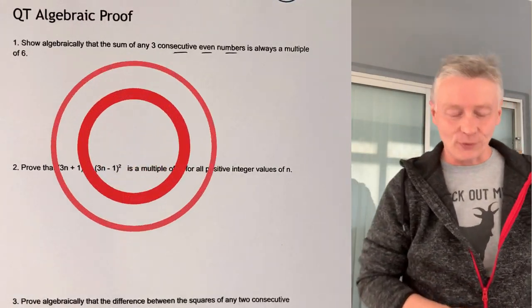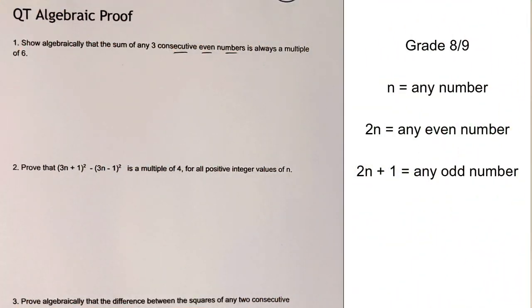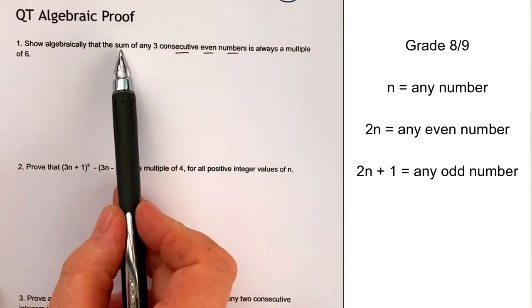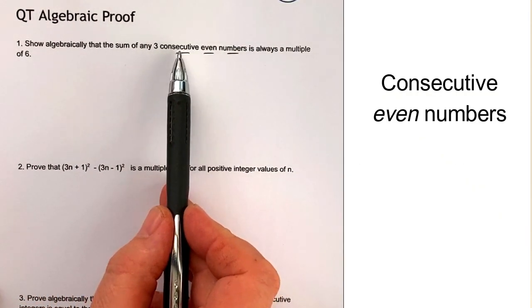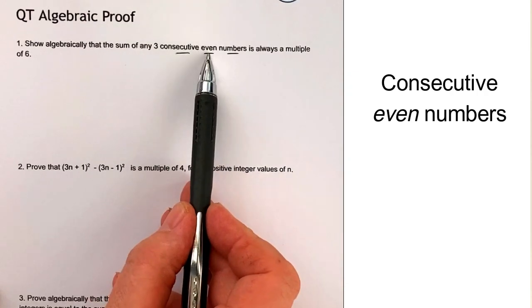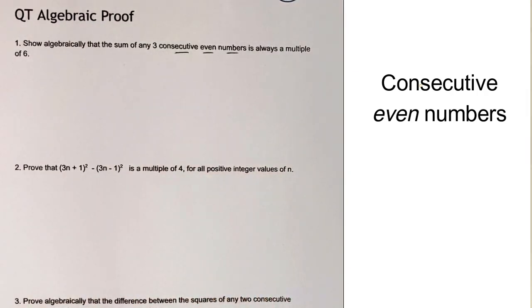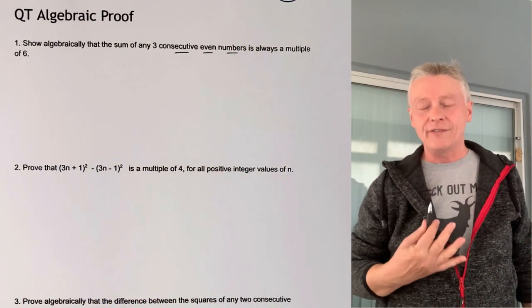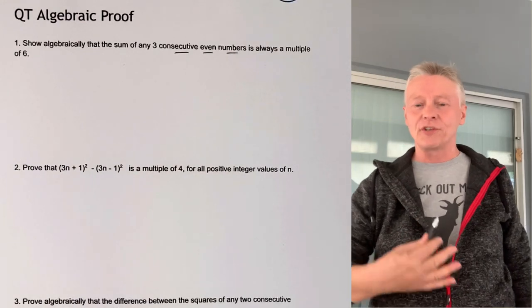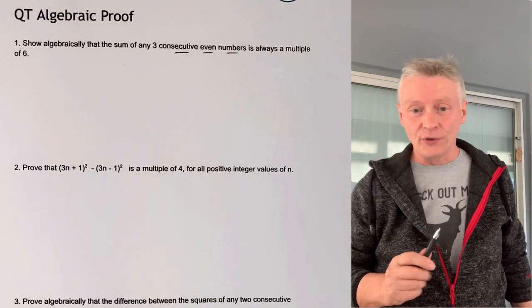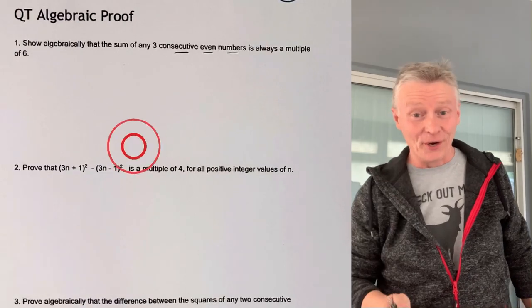Let's have a look at the first question. Okay, so the first question is to show algebraically that the sum of any three, and the important thing is consecutive even numbers. So as I mentioned, the first even number is 2n, so therefore the second even number must be 2n plus 2.